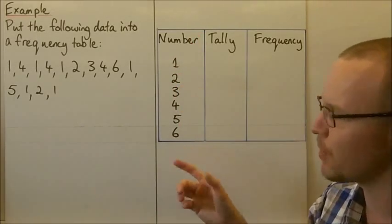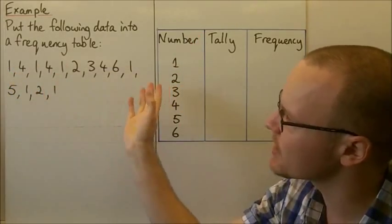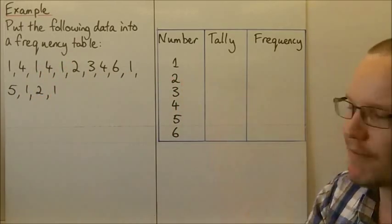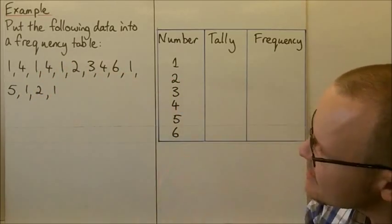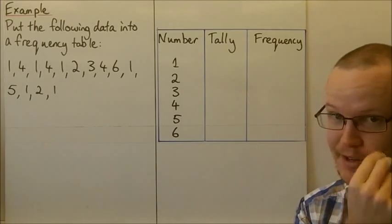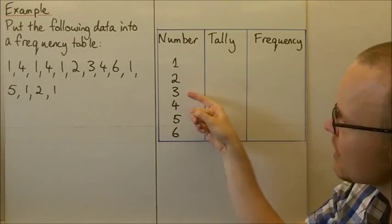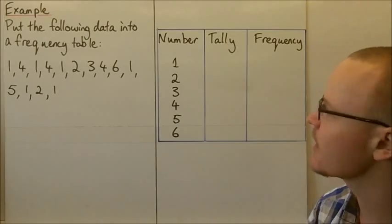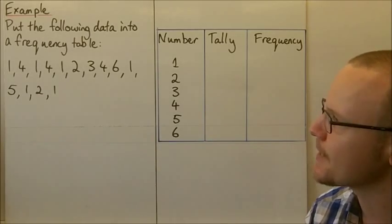Here we've got all the different possible numbers. We've looked at our numbers and gone, what's the smallest number? One. And what's the biggest number? Six. So we need all the numbers from one through to six. So they're nice and continuous: one, two, three, four, five, six there. We haven't skipped any numbers and we're going to do a tally now.